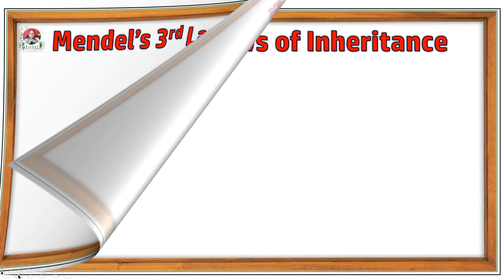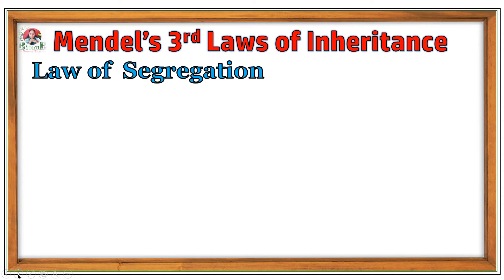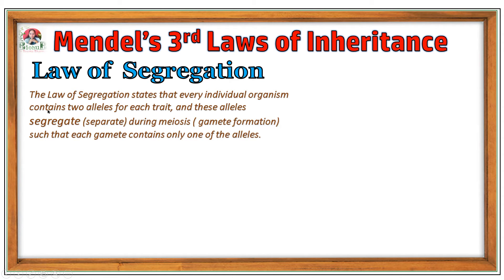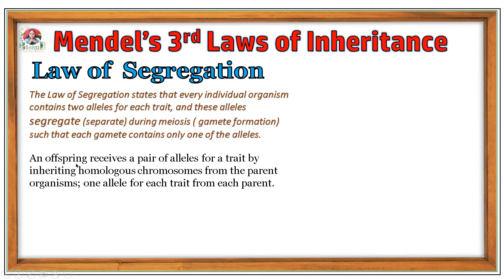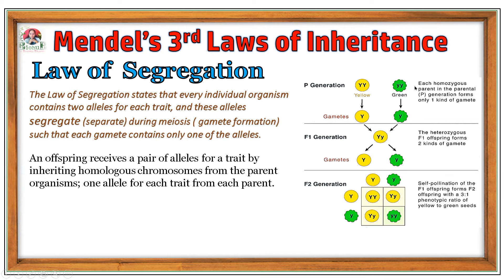Now coming to Mendel's third law of inheritance — the law of segregation. It states that every individual organism contains two alleles for each trait, and these alleles segregate during meiosis, meaning during gamete formation, so that each gamete contains only one of the alleles. This means an offspring receives a pair of alleles for a trait by inheriting homologous chromosomes from the parent organisms — one allele for each trait from each parent. For seed color, each homozygous parent in the parental generation forms only one kind of gamete. The yellow-seeded plant makes only capital Y gametes, and the green-seeded pure plant makes only small y gametes.